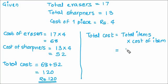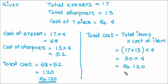Total items are 17 plus 13. Now, don't forget to put the bracket because we want to do the addition first before we do the multiplication. So, 17 plus 13 is equal to 30, that is equal to Rs.120, which is same as what we got in this way.